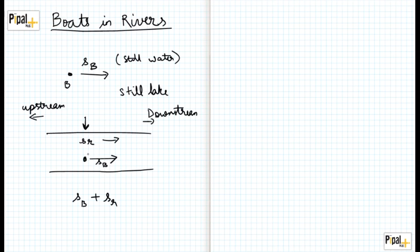So this is the speed of the boat downstream. Now if the same boat is put in this river which is flowing in this direction with the speed SR, and the boat now tries to move upstream.